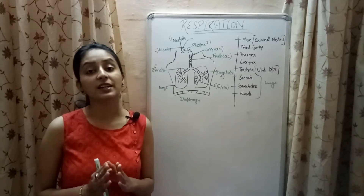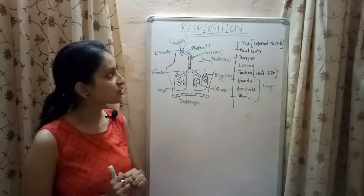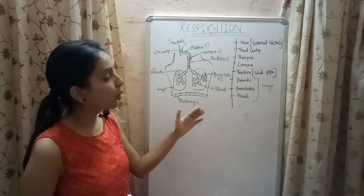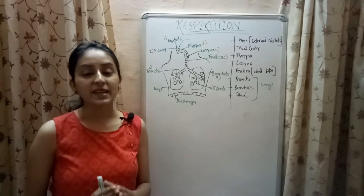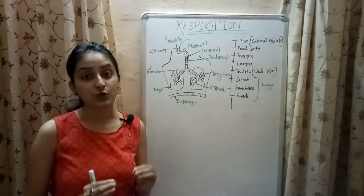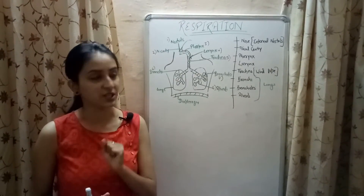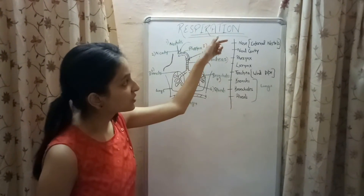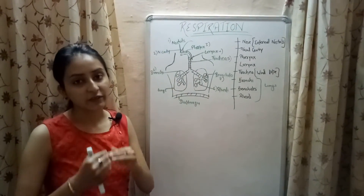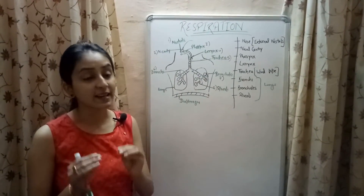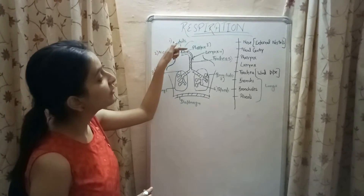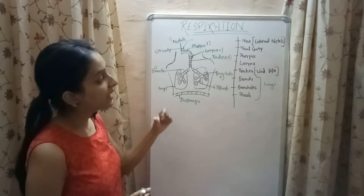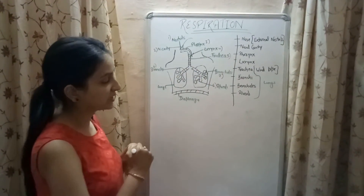Now let's look at the respiratory organs present in humans. Humans have a well-developed respiratory system containing various organs: nose, nasal cavity, pharynx, larynx, trachea, bronchi, bronchioles, and alveoli. Alveoli are the main site of respiration in humans and are known as the functional unit of respiration. Oxygen is taken in through the external nostrils, passes to the nasal cavity — also known as the nasal chamber — and then reaches the pharynx, which is a 12-centimeter-long tube.